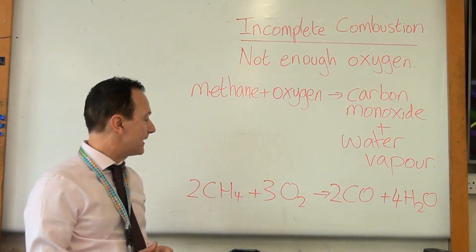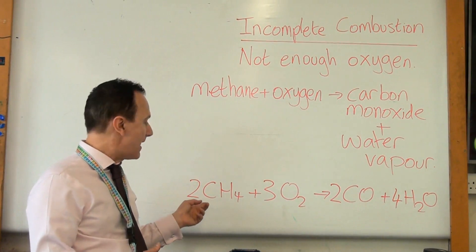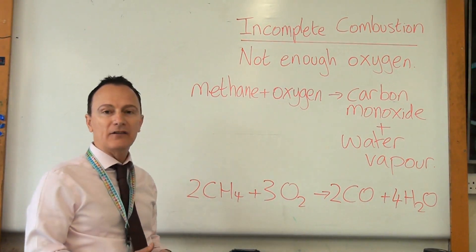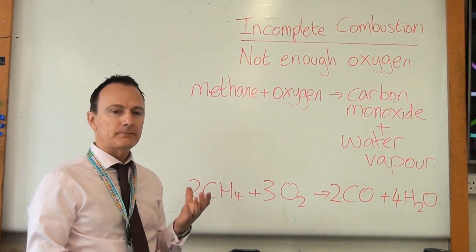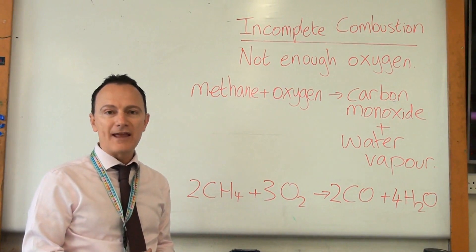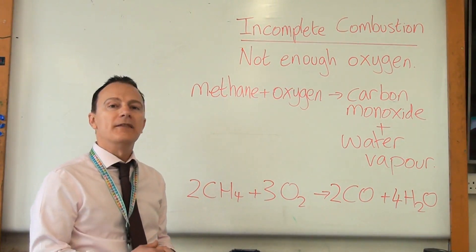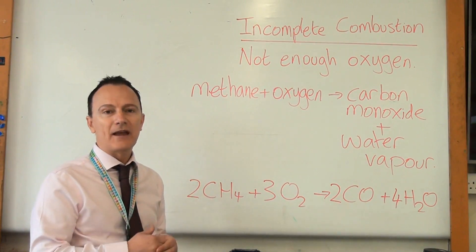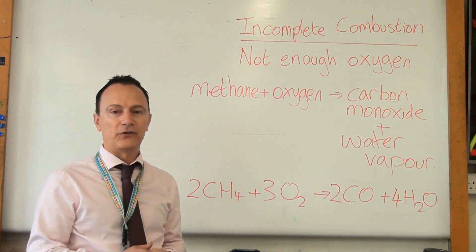Also with incomplete combustion, sometimes the fuel doesn't burn and you get carbon on its own not joined to any oxygen and that's in the form of soot. So for example if you've been heating a beaker on a yellow Bunsen burner flame so there's not as much oxygen getting through the air hole at the bottom then that can cause soot on the beaker and that's unburnt carbon and that's another example of incomplete combustion.